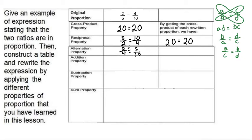We can multiply using the cross product property. 10 times 2 is 20, is equal to 4 times 5, which is also 20. So again, it shows that this alternation property does in fact work with the numbers that we chose for our original proportion.